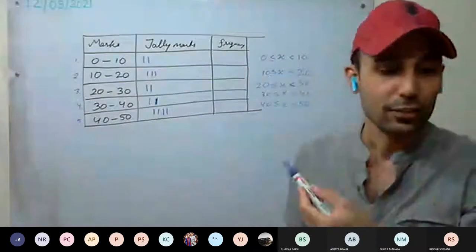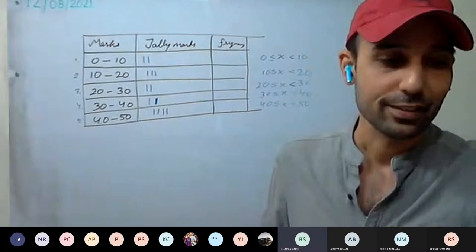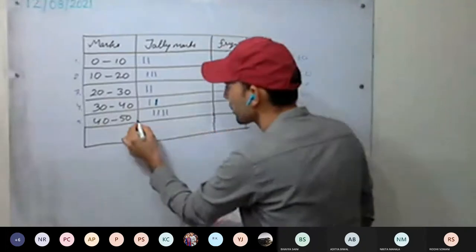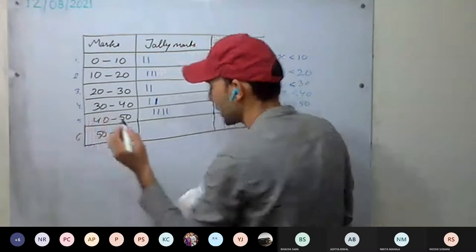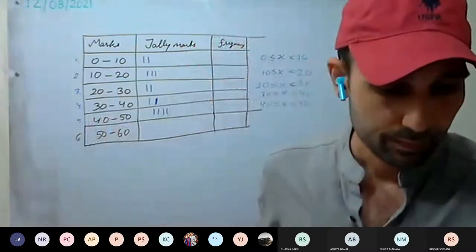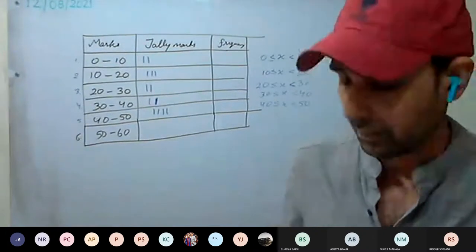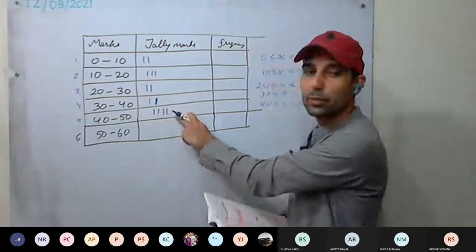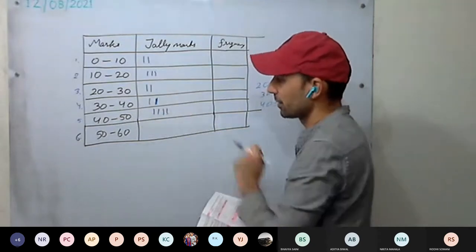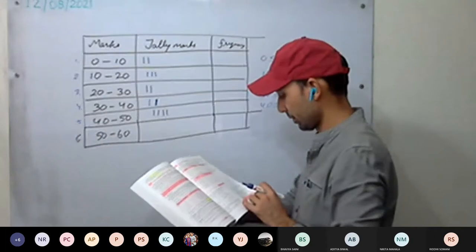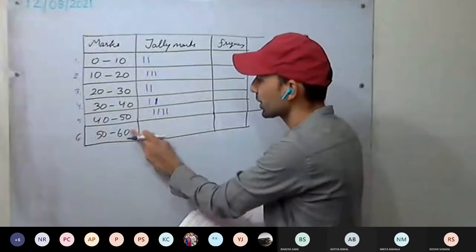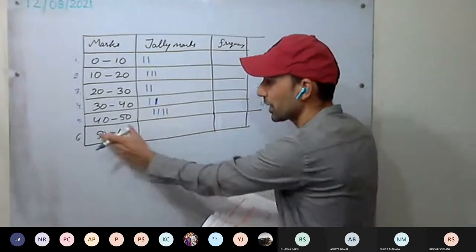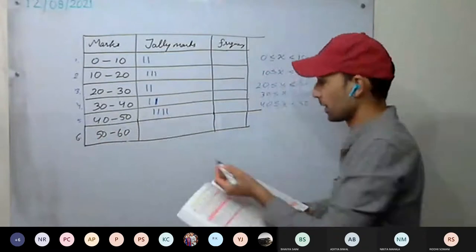Where should we put 50? We can't put it in the last class (40 to 50) because upper limit is excluded. So we need one more class interval: 50 to 60 as our sixth class interval. Many books will still put 50 marks in the last interval — some books create one more class interval.